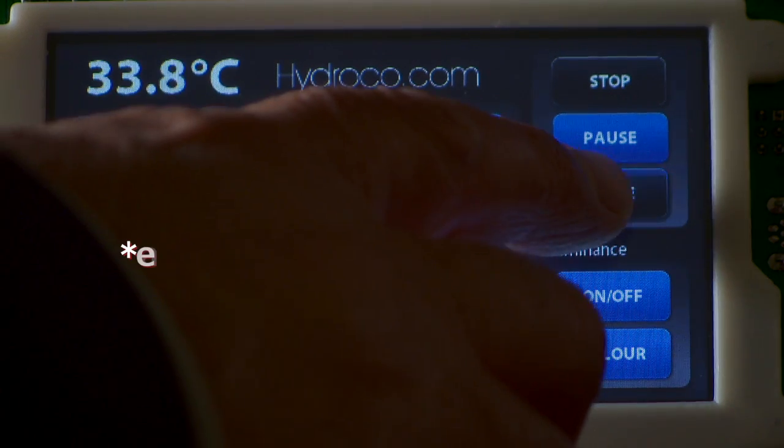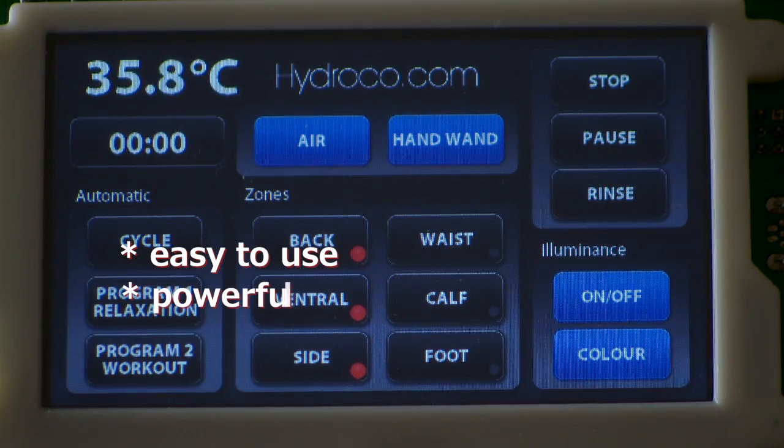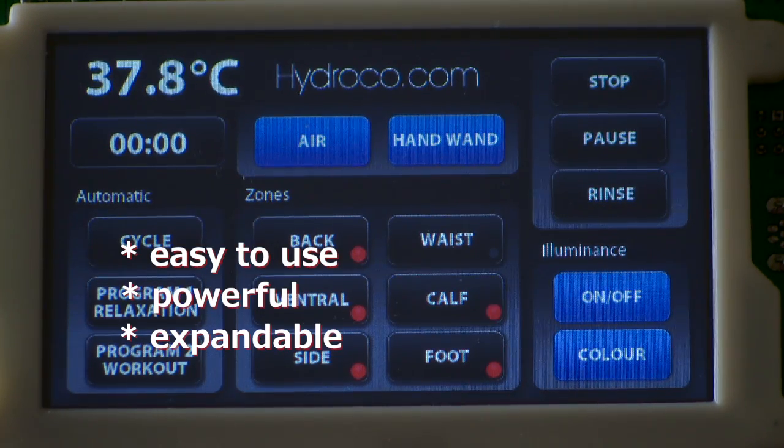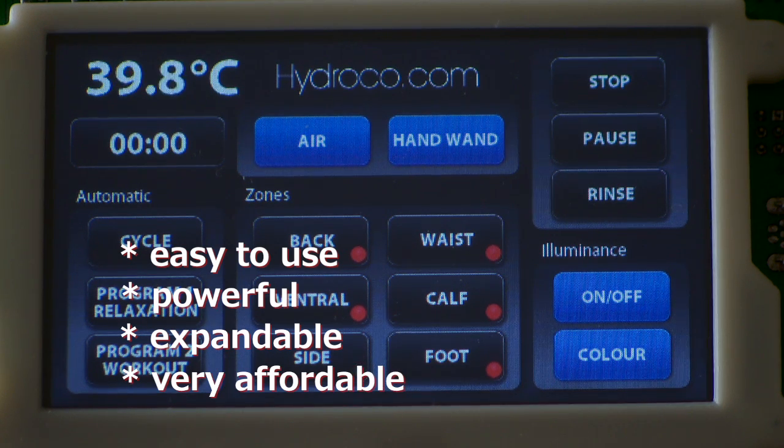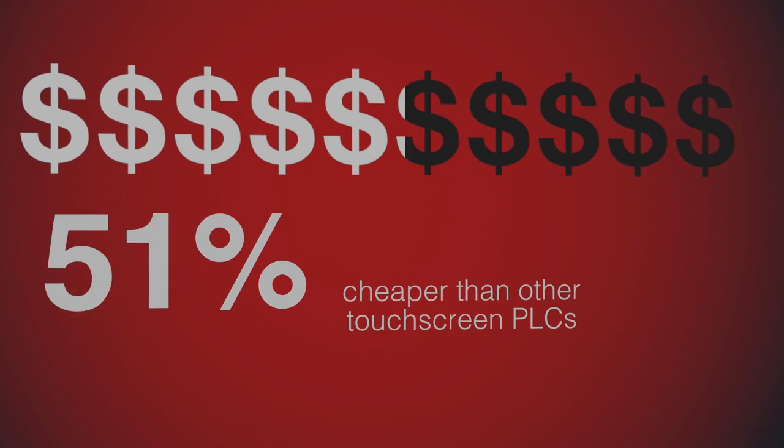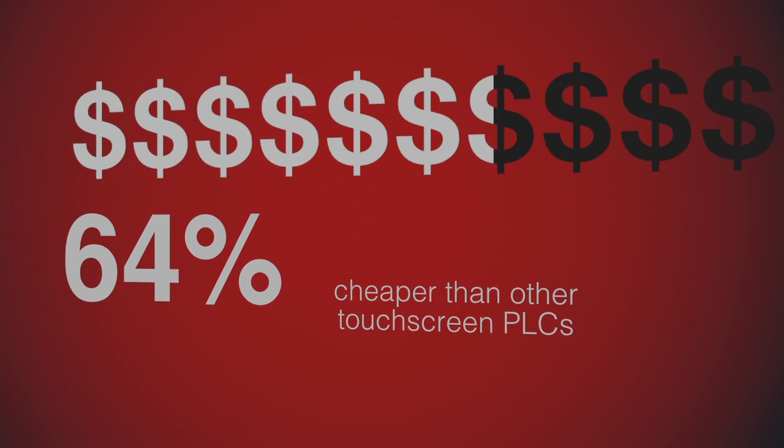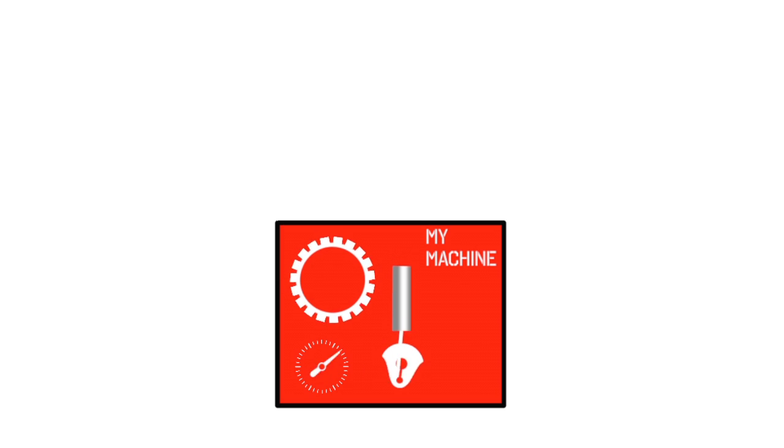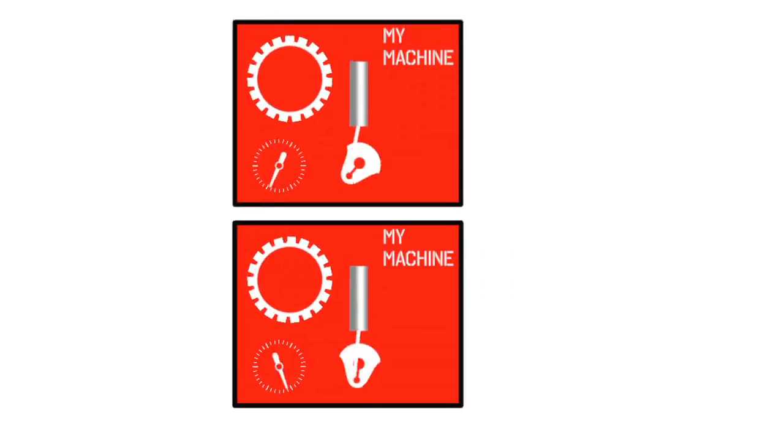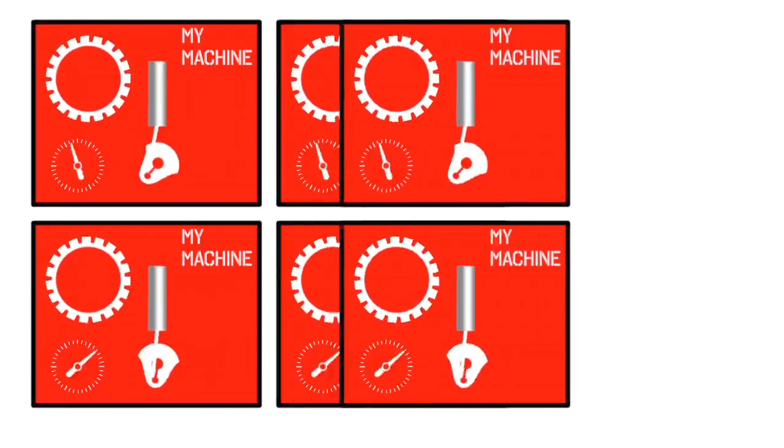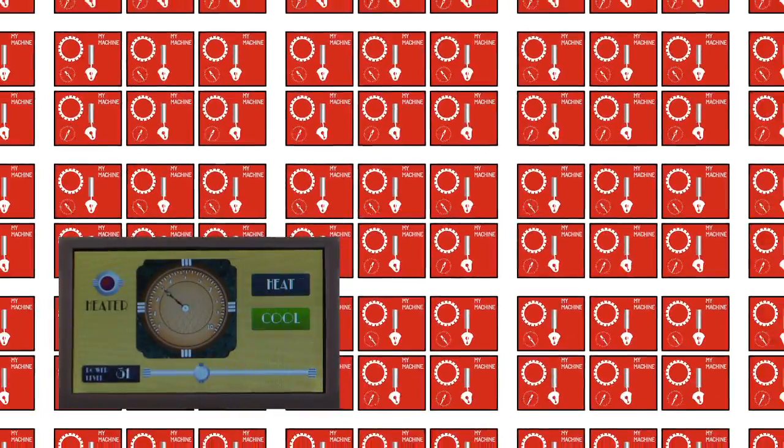The HMI430 is easy to use, powerful, expandable and, best of all, very affordable. In fact, it's two to three times cheaper than other industrial touchscreen PLCs on the market. This makes it the ideal choice for small to medium businesses who are making multiple machines that need a powerful controller with a modern color touchscreen.